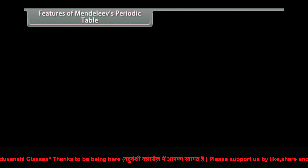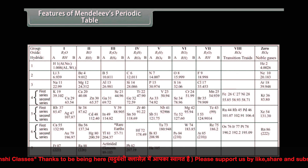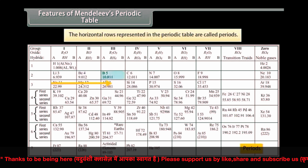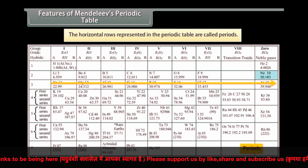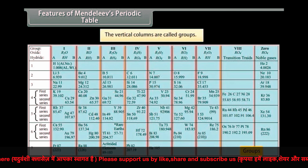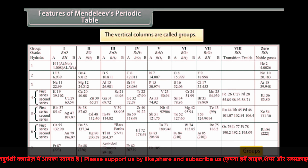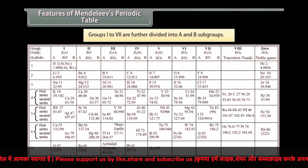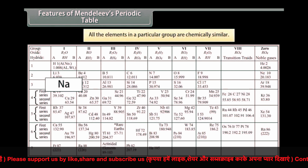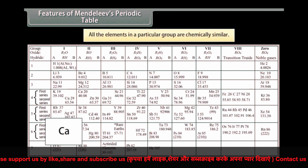Mendeleev's periodic table has the following features. The horizontal rows are called periods; there are seven periods numbered one to seven. Properties of elements in a particular period show regular gradation from left to right. The vertical columns are called groups; there are nine groups numbered one to eight and zero. Groups one to seven are further divided into A and B subgroups. Groups zero and eight do not have any subgroups. All elements in a particular group are chemically similar and show regular gradation in physical properties and chemical reactivities.